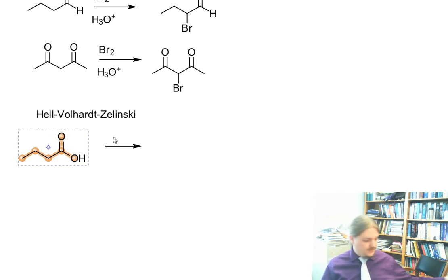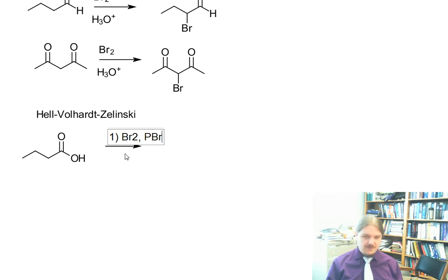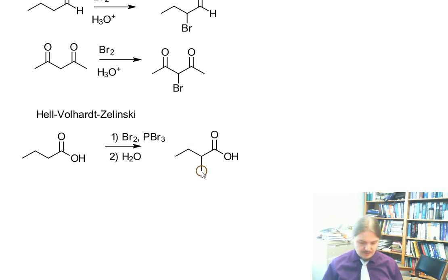So if you first treat it with bromine and phosphorus tribromide and follow that with aqueous hydrolysis, you end up with bromine here.